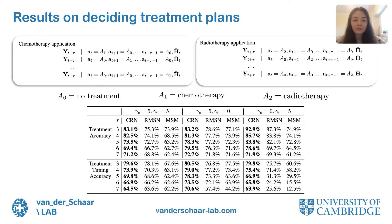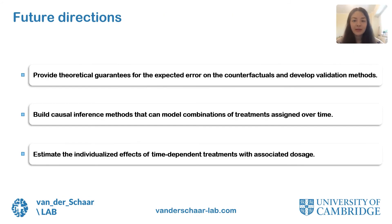In the paper, we also provide additional results on real data from the MIMIC database. This real data set consists of ICU patients where we want to estimate the effect of antibiotics on white blood cell count. In the case of real data, we can only evaluate the ability of the methods to estimate the factual outcomes. In terms of future research directions, we believe it is important to develop validation methods for counterfactual estimation models, provide theoretical guarantees for the expected error on estimated counterfactuals, and develop methods that handle time-dependent confounders, combinations of treatments, and treatments with associated dosage.